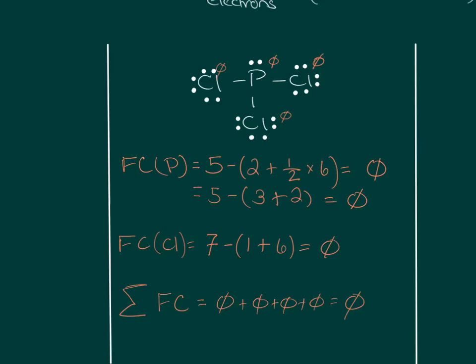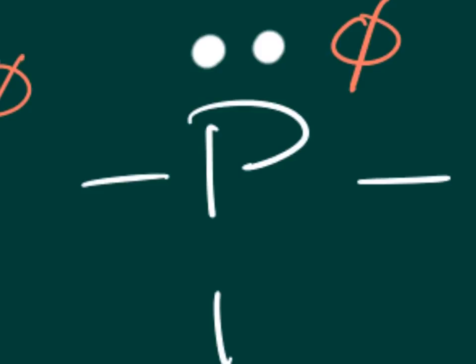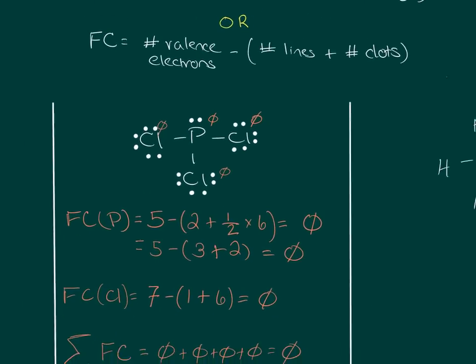When doing formal charge calculations, we never care about the identity of the atoms that anything is bound to. When we calculated for phosphorus, it didn't matter that it was bonded to chlorine — it could have been bromine or anything else. All we cared about were how many bonds and how many lone pairs the phosphorus had. You're really thinking about an atom in isolation: how many lone pairs are on it and how many things are bonded to it, regardless of what those atoms are.